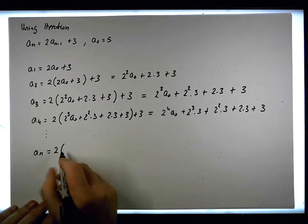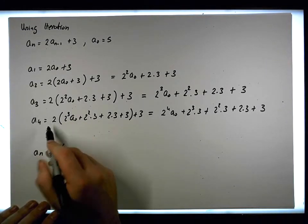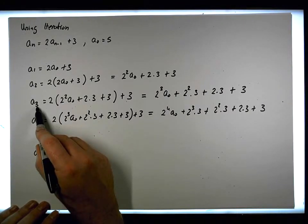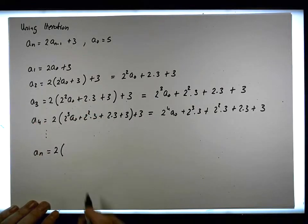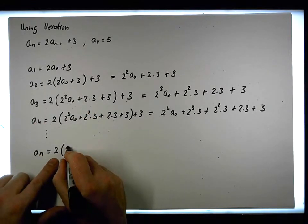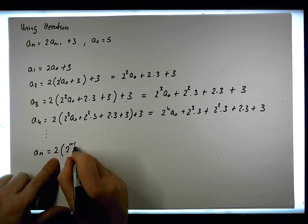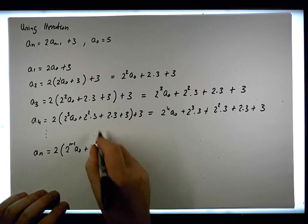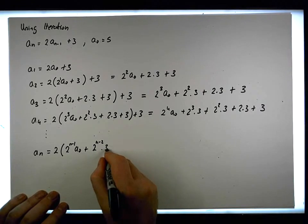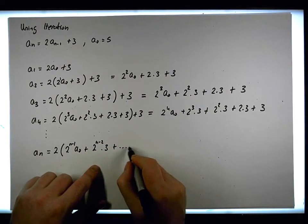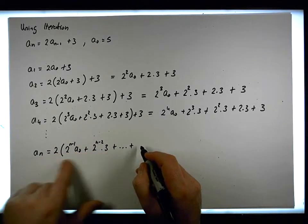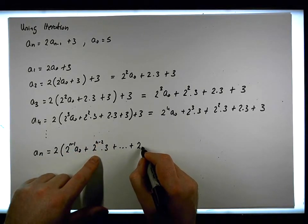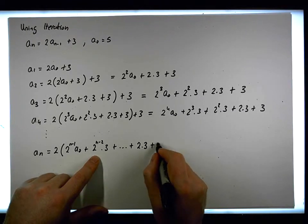We can continue out to the nth term. For the fourth index the power is 3, for the third index the power is 2, for the second index the power is 1. So a_n = 2^(n-1)·a_0 plus 2^(n-2) times 3, continuing all the way down, plus 2 times 3, plus 3.